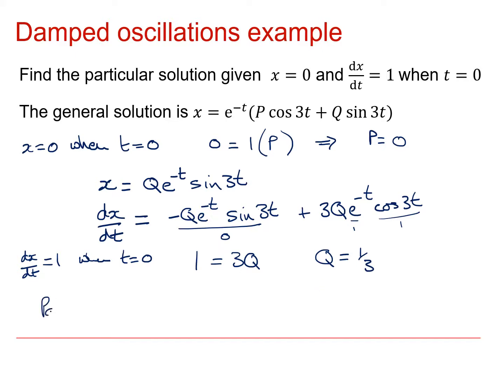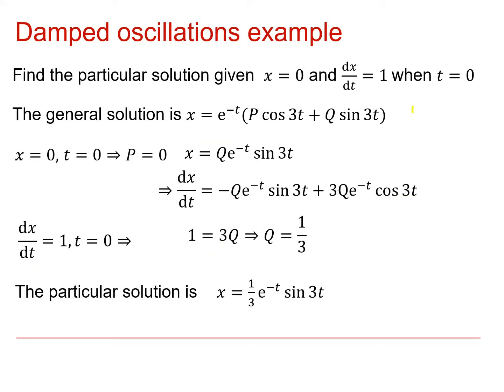And so my particular solution is going to be x equals 1 third e to the minus t sine 3t. Again, that's written up more neatly. Here's where I've used x equals 0 and t equals 0. It gives me that p is 0, so I haven't got any cosines in the final solution, so I just get this. Differentiating that and plugging in these initial conditions, I end up with q as a third, and therefore this for the particular solution.